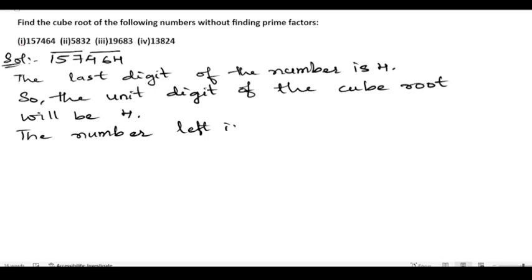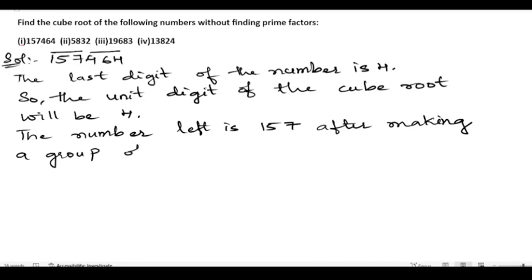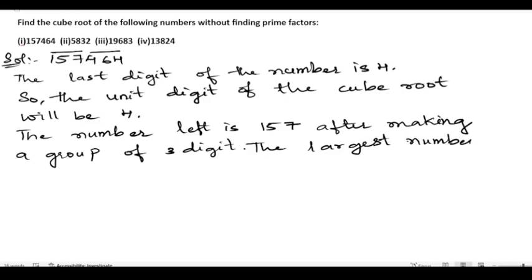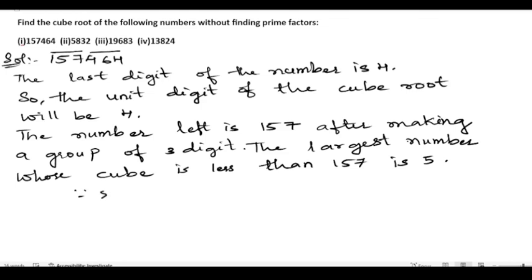After making a group of three digits, 157 is left here. The largest cube number which is near to 157 is 125. So the largest number whose cube is less than 157 is 5, because 5 cubed is 125.